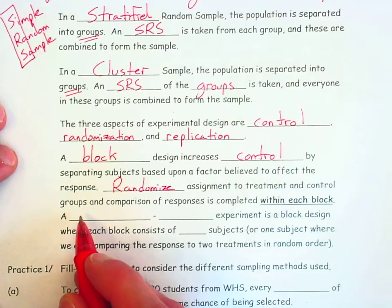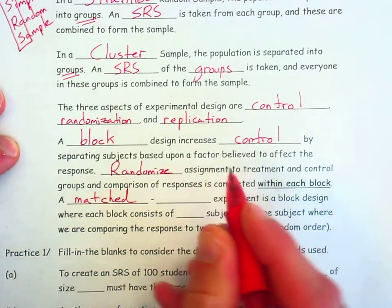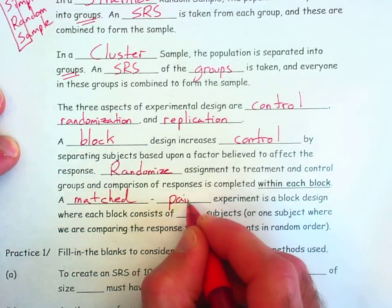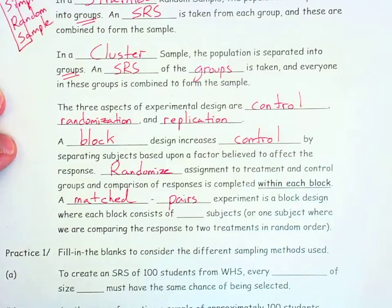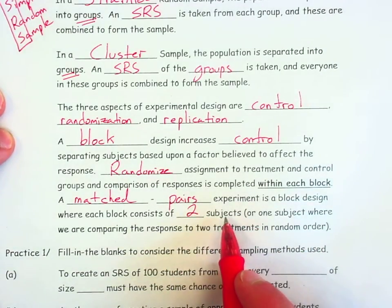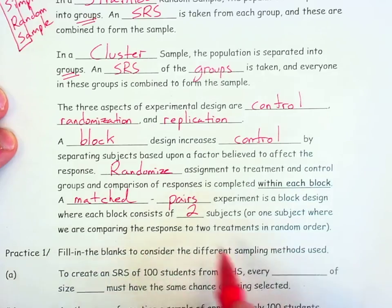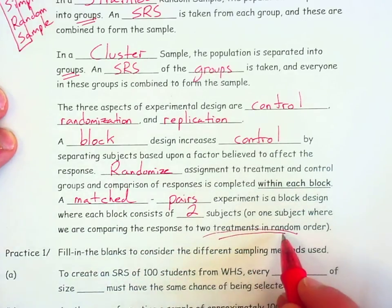A specific type of blocked design is called a matched pairs experiment. That is a block design where each block consists of two subjects. So we have subjects that are similar, and then one subject is assigned to a treatment group, one subject is assigned to a control group, and then we compare the results between those two similar subjects. Another way that this is done is sometimes a blocked or matched pairs experiment can be just one subject where we're comparing the response to two treatments in random order that are both being applied to the same subject.